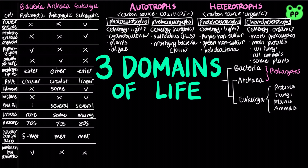In the last section of this video, I'm going to compare sexual life cycles of eukaryotes. A life cycle is the generation-to-generation sequence of stages in the reproductive history of an organism. The alternation of meiosis and fertilization is common to all organisms that reproduce sexually. However, the three main types of sexual life cycles differ in the timing of meiosis and fertilization.